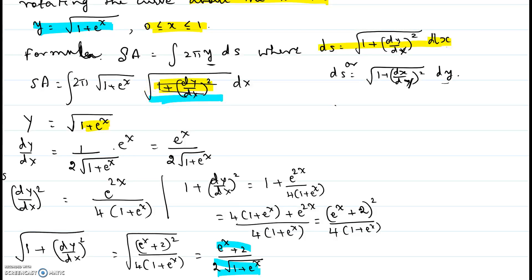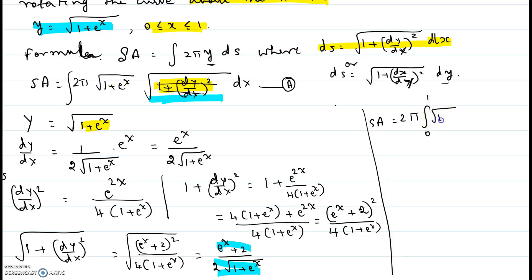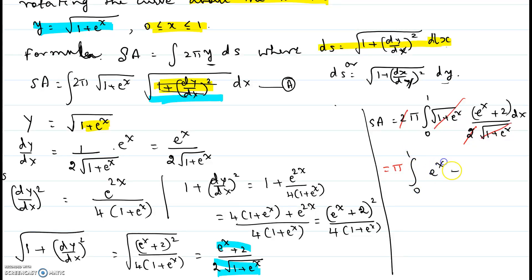Going back to the surface area integral: S equals 2π times the integral from 0 to 1 of the square root of (1 plus e to the x) times (e to the x plus 2) divided by 2 times the square root of (1 plus e to the x) dx. The square root of (1 plus e to the x) terms cancel, and the 2s cancel, leaving just π times the integral from 0 to 1 of (e to the x plus 2) dx.